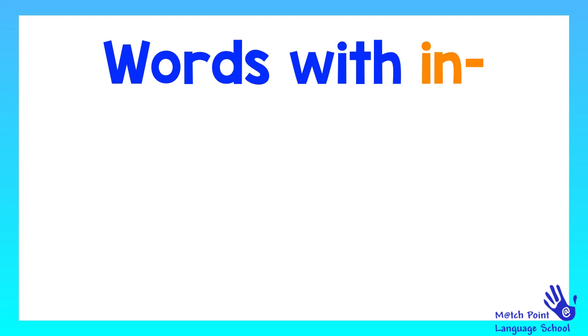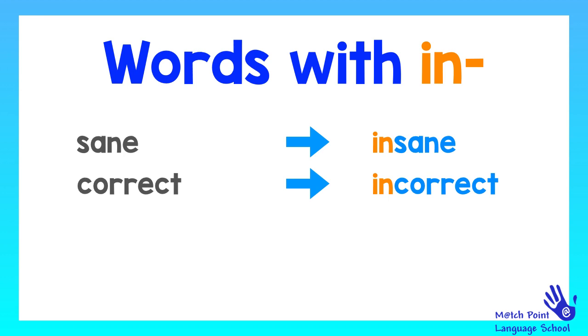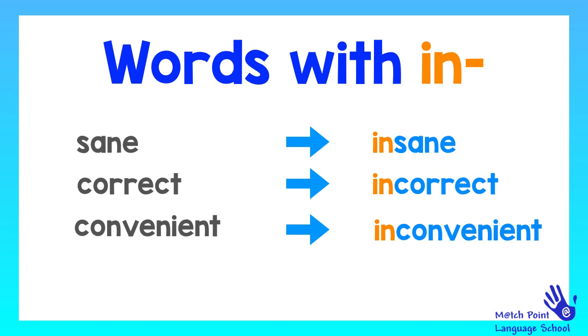The next prefix is in. In this one we don't have a rule. So for example, we have the word sane, which becomes insane. Another word is correct, which becomes incorrect. We also have convenient, which becomes inconvenient. Next word is visible, which becomes invisible. Remember, you can pause the video.